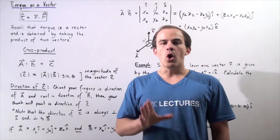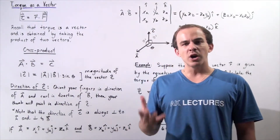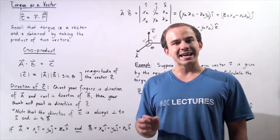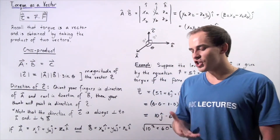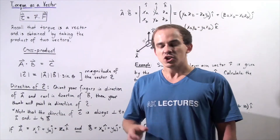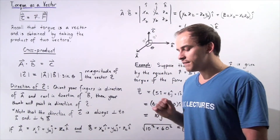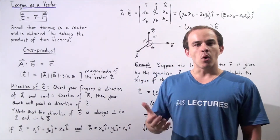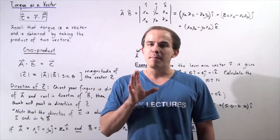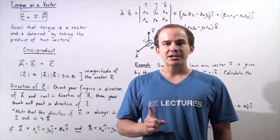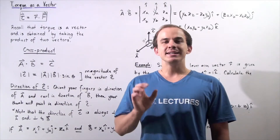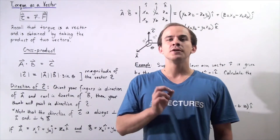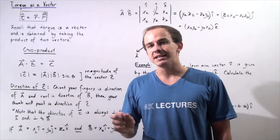We spoke about one type of product between two vectors that gives us a scalar quantity, known as the dot product. One very common example in physics of a dot product is work. Work is a scalar quantity that only has magnitude and no direction, and it is obtained by taking the product of two vectors: the force vector and the displacement vector.